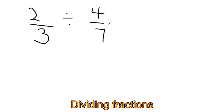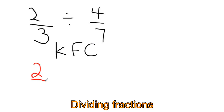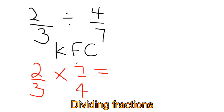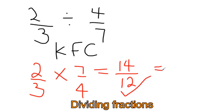Look at this question. We're going to use KFC to solve the problem. We keep the first fraction, we flip the second fraction, and we change the divide to a times sign. Now you just need to multiply the top and multiply the bottom.